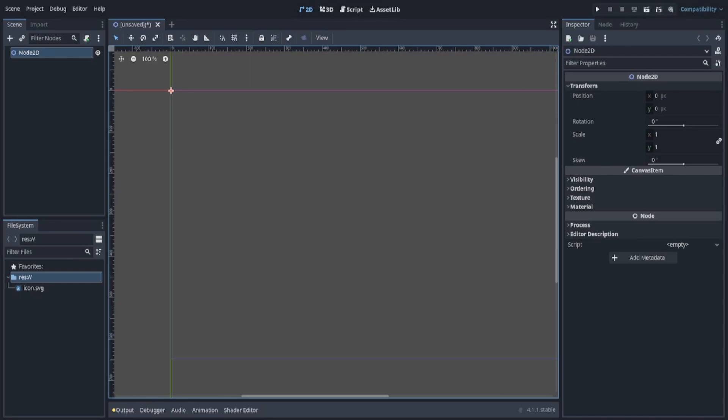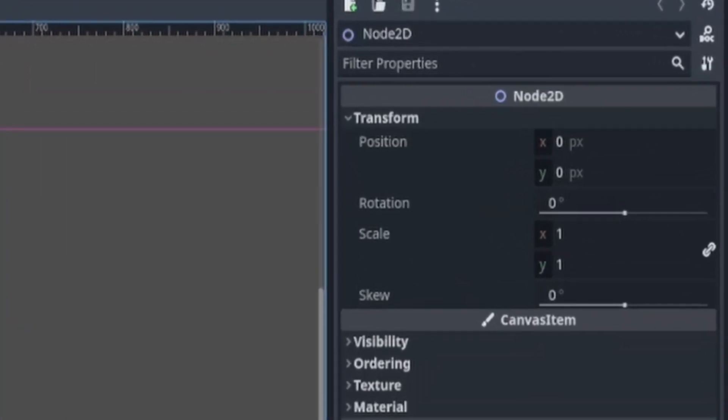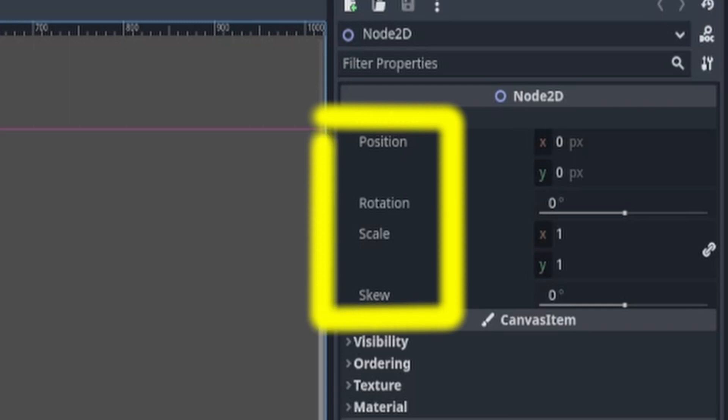Now all these different properties can be found on the right side of our screen on the Node 2D transform. Here we see position, rotation, scale, and skew.